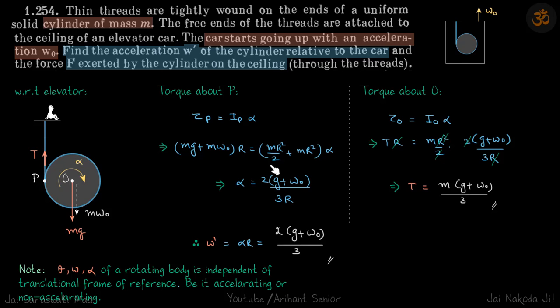So we need to find the acceleration of the cylinder with respect to the car. Because this point is at rest with respect to the car, the acceleration of this point will be simply alpha R. So alpha R is our answer.